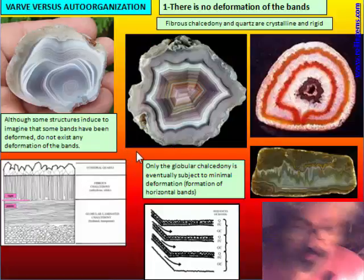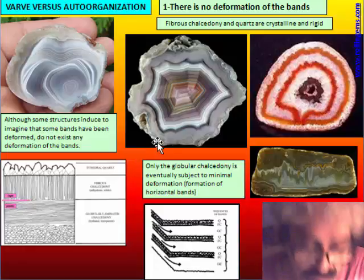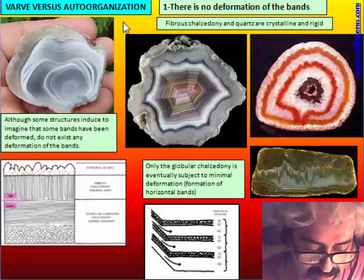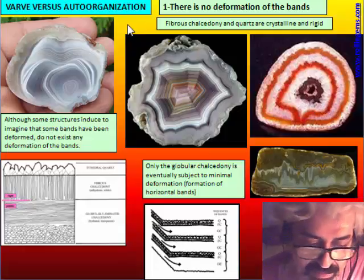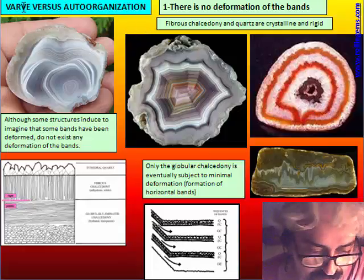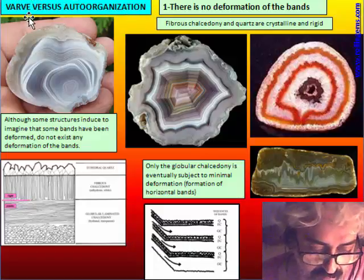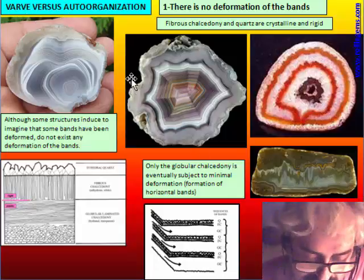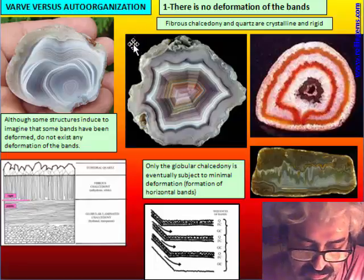In our theory, the repetition of bands is like many geological phenomena that show repetition of phenomena called varves. We want to demonstrate that the theory of varves is better at explaining the morphology of agate than the auto-organization theory of German scientists.